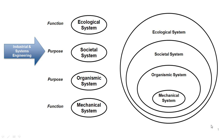We've been talking about the four classes of systems typically seen in engineering: from mechanical at its smallest, to organismic — people using those mechanical systems — to societal systems that form larger aggregates, and at the highest level, ecological systems that form the overall context for engineering. As industrial and systems engineers, we almost always focus our scope at the societal system level: collections of people using mechanical systems to accomplish ends within an ecological system.